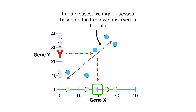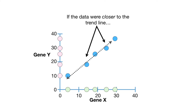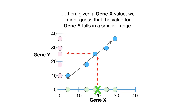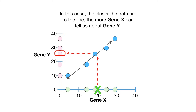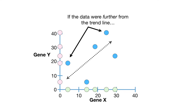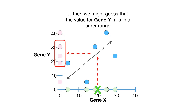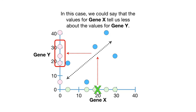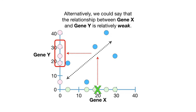In both cases, we made guesses based on the trend we observed in the data. If the data were closer to the trend line, then given a gene X value, we might guess that the value for gene Y falls in a smaller range — the closer the data are to the line, the more gene X can tell us about gene Y, and we could say the relationship is relatively strong. If the data were further from the trend line, then we might guess the value for gene Y falls in a larger range, and we could say the relationship is relatively weak.